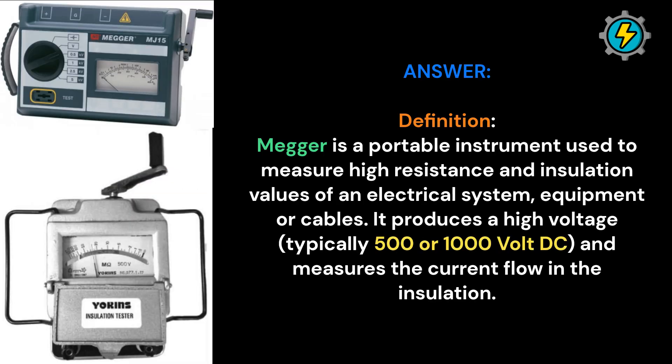Definition: MEGAR is a portable instrument used to measure high resistance and insulation values of an electrical system, equipment, or cables. It produces a high voltage, typically 500 or 1000 volt DC, and measures the current flow in the insulation.